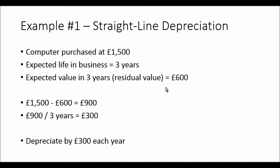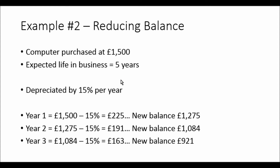Hopefully you can see the difference between straight-line method and reducing balance. With straight-line, it's the same monetary amount each year — we use cost minus residual value, then divide that depreciation amount over the lifetime of the asset. With reducing balance, you're reducing by a percentage each year, so the actual monetary value is different each year.